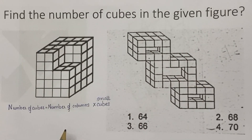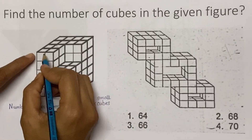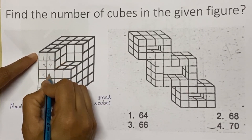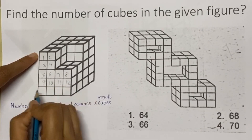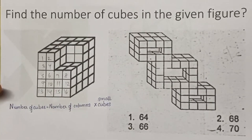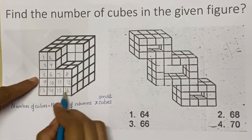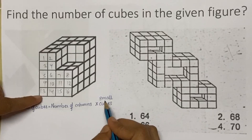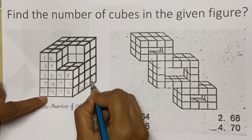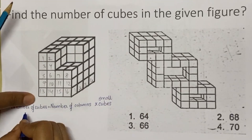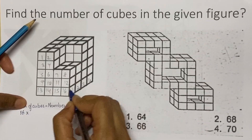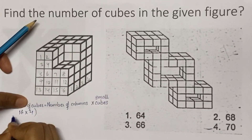So to find the number of cubes, first find the columns. Let's see how many columns there are here. It's 1, 2, 3, 4 — so the number of columns is 16. Find the cubes: how many cubes in one column? It is 1, 2, 3, 4 cubes. So here the number of columns is 16, and we have to multiply that with the cubes — 4 in one column. So let's multiply that.